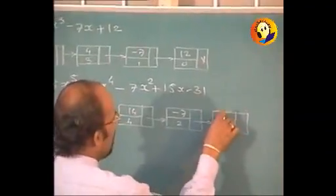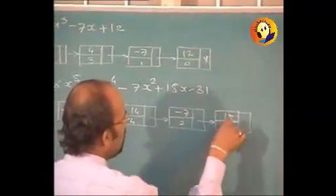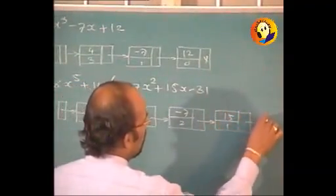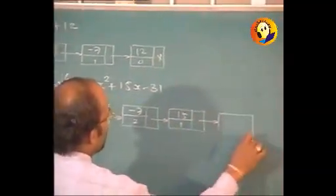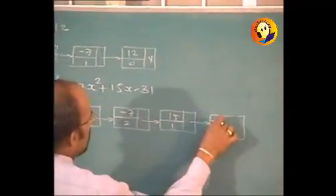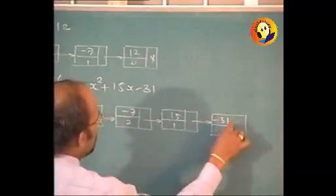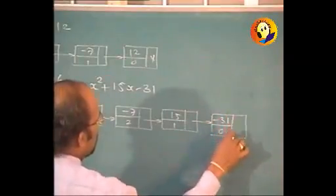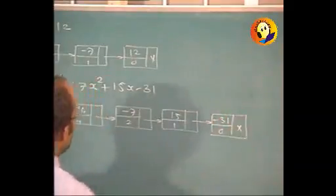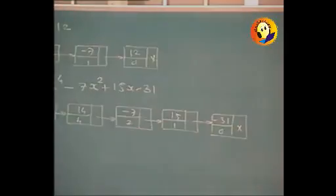It is not necessary that the user should input the data in descending powers — you should take care that the nodes are arranged in descending powers. The user may input any term at the beginning; for example, the user may start with −31 in the case of the second polynomial.